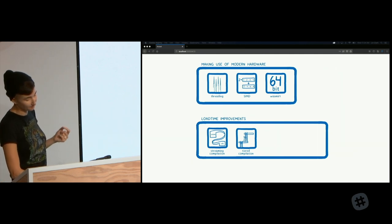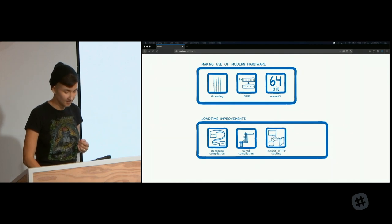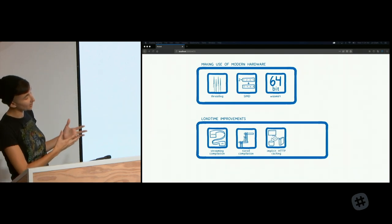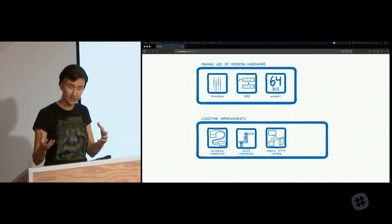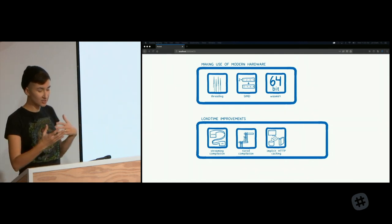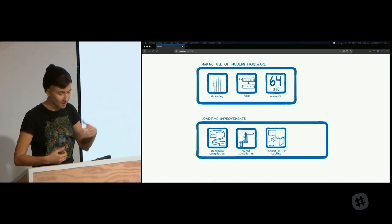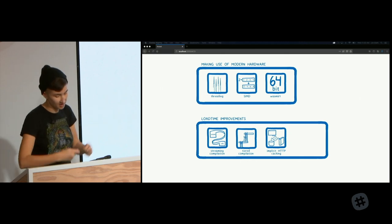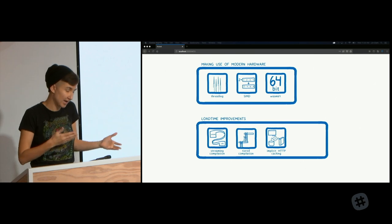There's an even better trick to skip compiling most of the time. Unlike JavaScript, if you load the same WebAssembly file twice, it compiles to the same machine code. That means we can actually store the compiled code in the HTTP cache. When the page goes to fetch that WASM file, the cache can give it the pre-compiled version, skipping compilation completely if it's already cached.